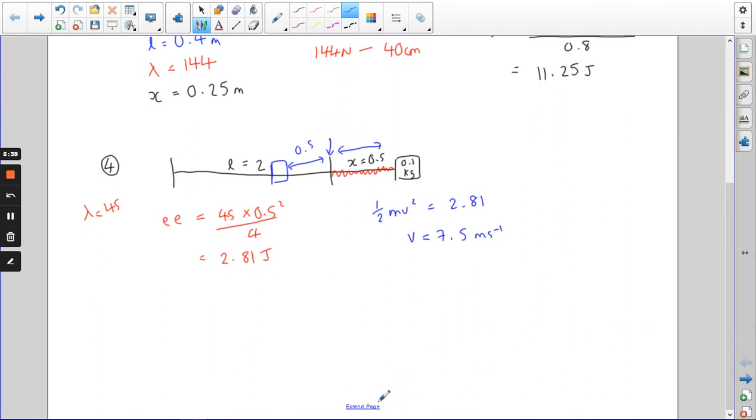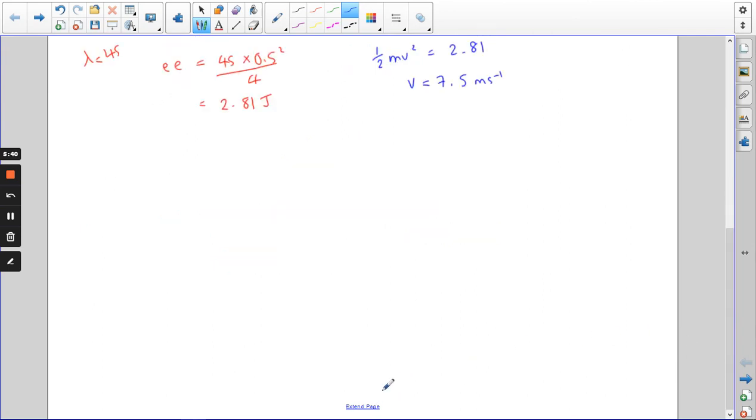Then we skip to number 10. So number 10, the steeplejack, that's somebody who climbs up chimneys if you're wondering. The steeplejack is falling. When he falls, his rope becomes taut. And then the question is, how much further does he fall? So after he's fallen the 2 metres, at the point where his string sort of goes tight, taut, he's got some kinetic energy.